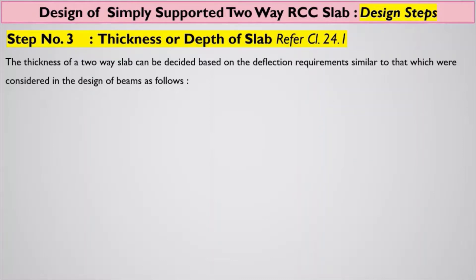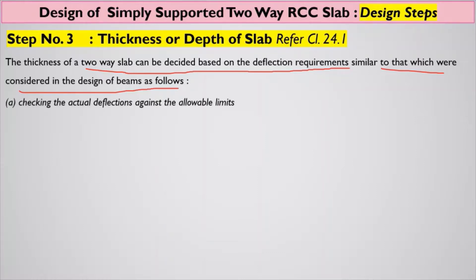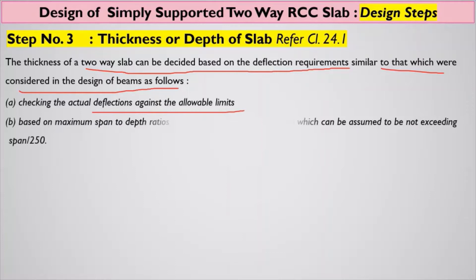The thickness of the two-way slab can be decided based on the deflection criteria, similar to the design of beams or one-way slabs. The first point is checking the actual deflection against the allowable limits, and the second point is based on the maximum span-to-depth ratio (L/D ratio) specified for serviceability criteria, which can be assumed to not exceed span divided by 250.